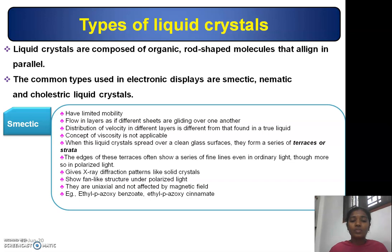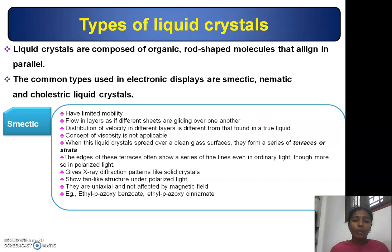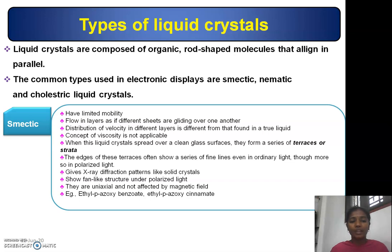The edges of these terraces often show a series of fine lines even in ordinary light, and more so in polarized light. Smectic liquid crystals give X-ray diffraction patterns like solid crystals, show a fan-like structure under polarized light, and are uniaxial and not affected by magnetic field. Examples are ethyl para-azoxybenzoate and ethyl para-azoxycinnamate.